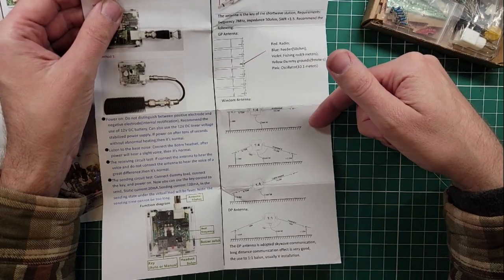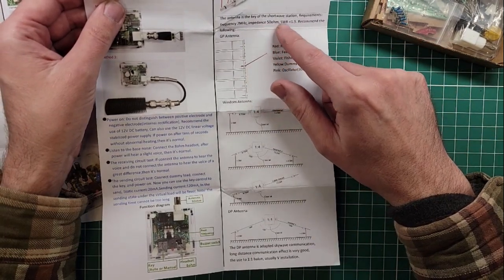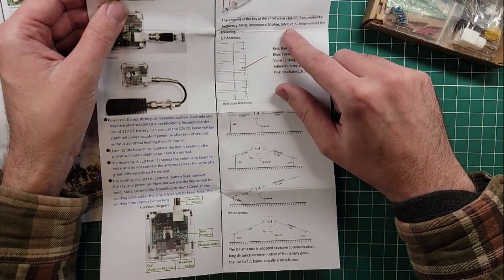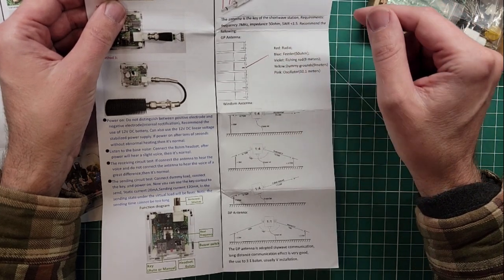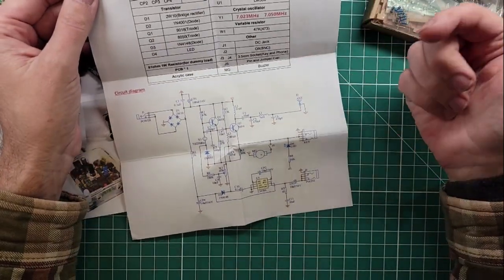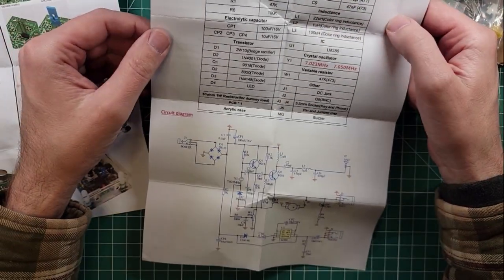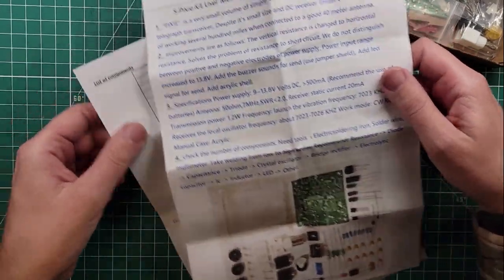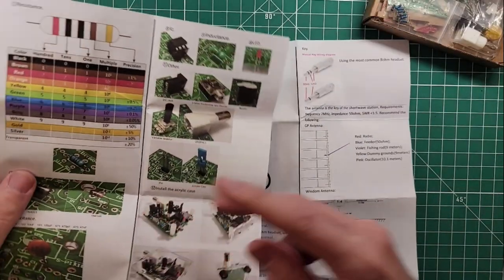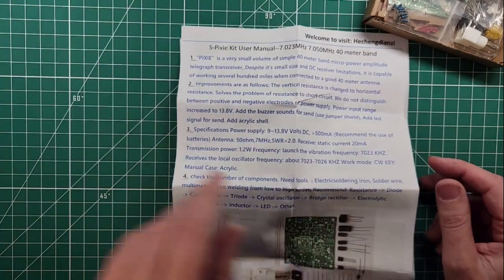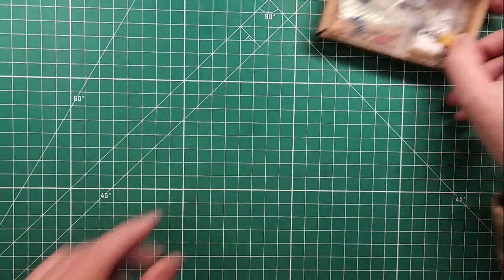It looks like it will work with either kind of key, an auto key or a manual key. So an iambic key or a straight key. We'll have to test that out too. The antenna is the key of the shortwave station, which is absolutely true. And they want you to have a 50-ohm antenna with an SWR of less than 1.5 to 1. And this will work off of 12 volts, which is nice. List of components and a circuit diagram. But there really isn't anything that tells you how to install it. So let's take a look at what comes in the box.